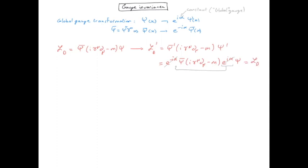As a result, a global gauge invariance is the symmetry of the Dirac Lagrangian.